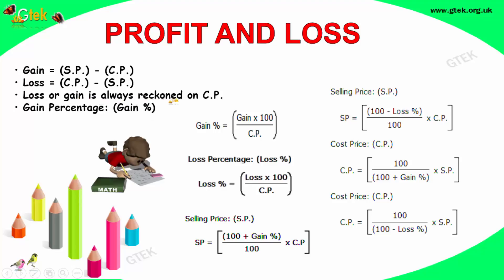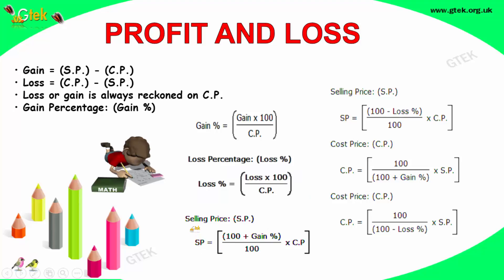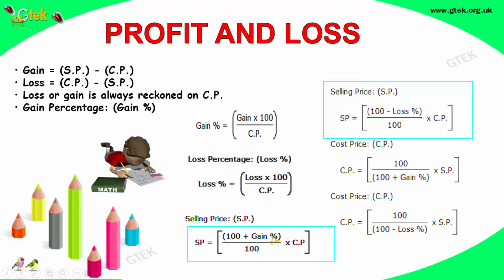You can see loss or gain is always reckoned on cost price, which is shown here. And the loss percentage is loss into 100 divided by the cost price. Selling price is equal to 100 plus gain percentage, divided by 100, into cost price. And if there is a loss, selling price is equal to 100 minus loss percentage divided by 100, into cost price.